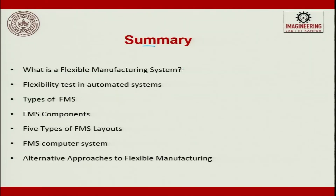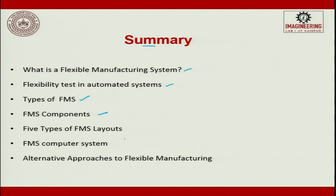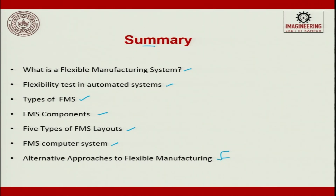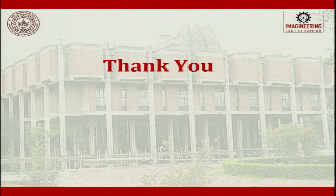To summarize: first we saw what FMS is; then the flexibility test in an automated system to decide whether to go for FMS; then types of FMS; then FMS components — machine, computer, and handling; then five different types of layouts; then FMS computer system functions; and finally agile manufacturing, mass customization, and reconfigurable manufacturing system — these are the alternative approaches coming to flexible manufacturing in today's environment. Thank you.